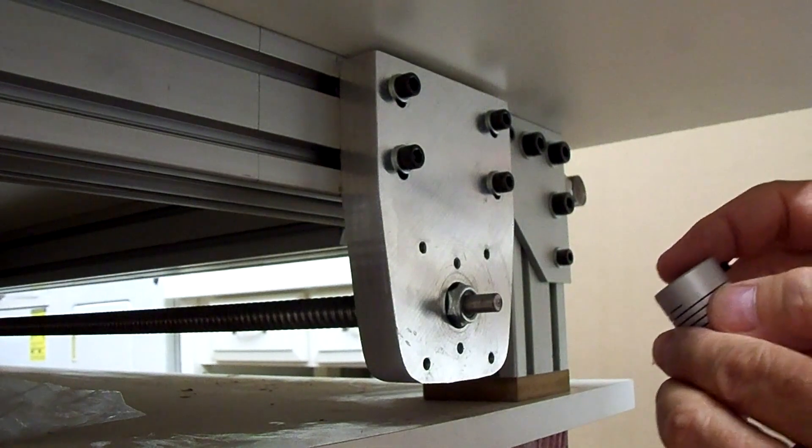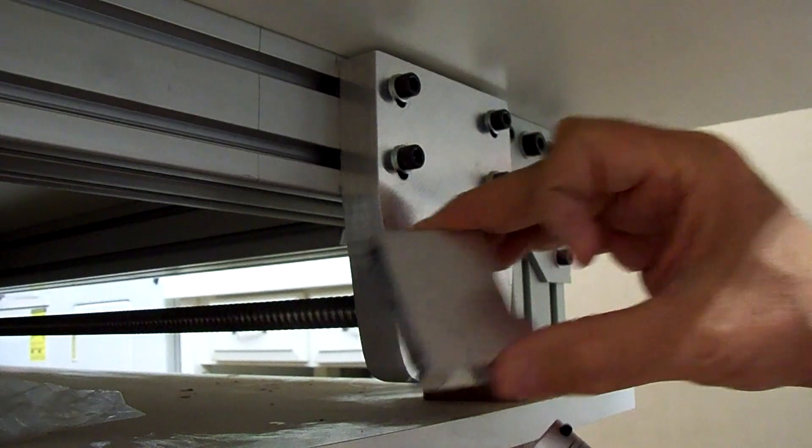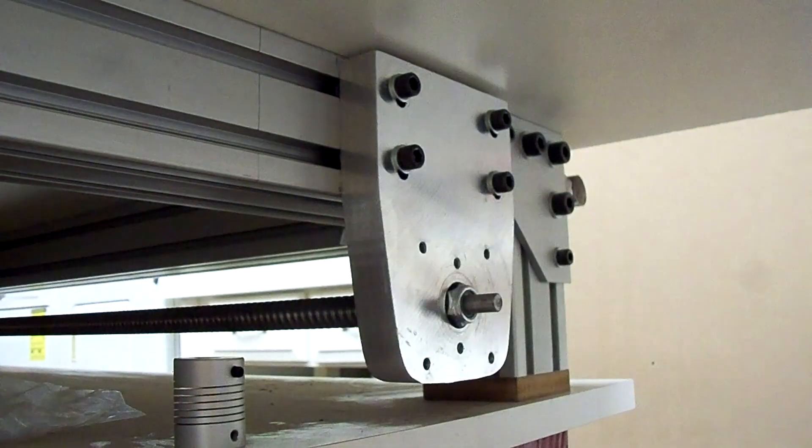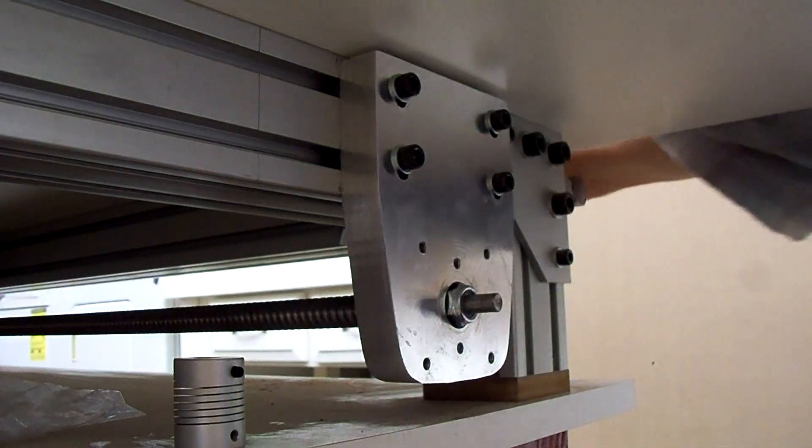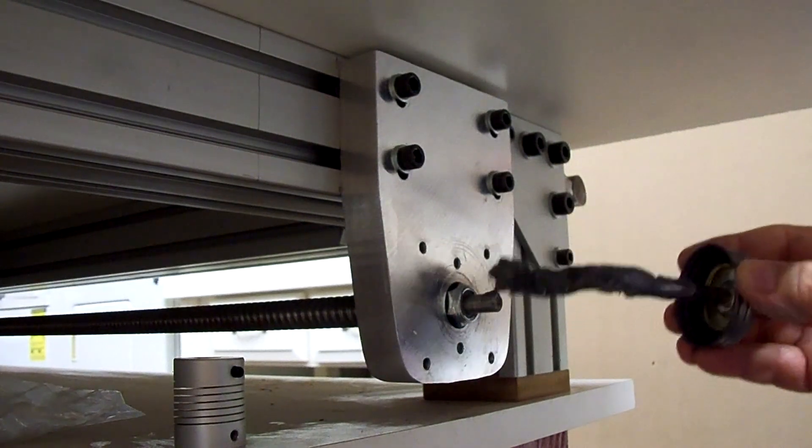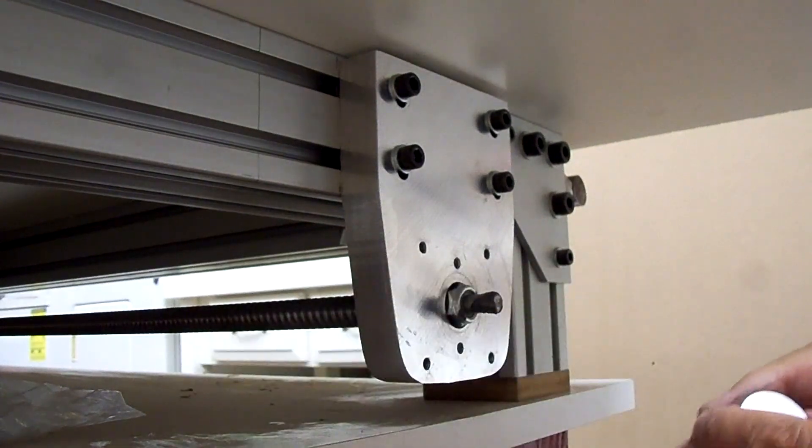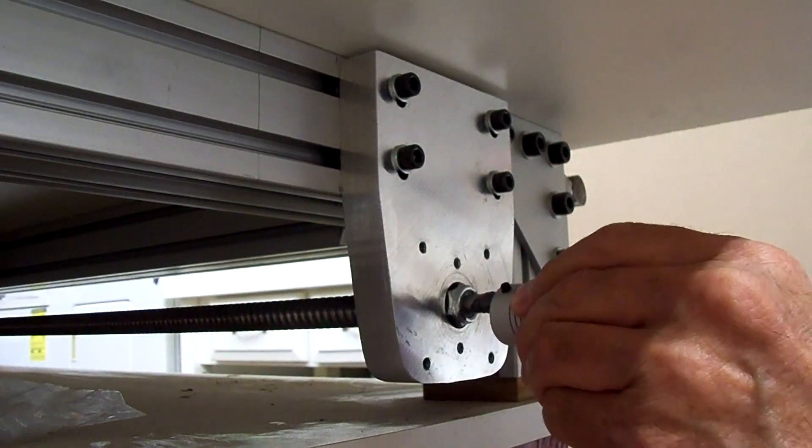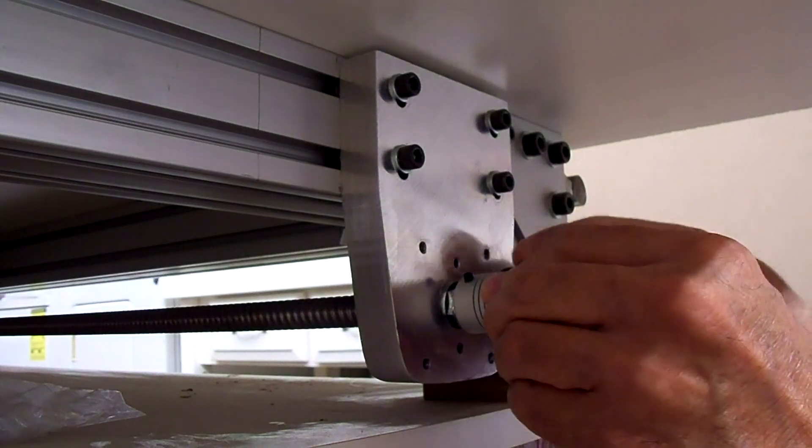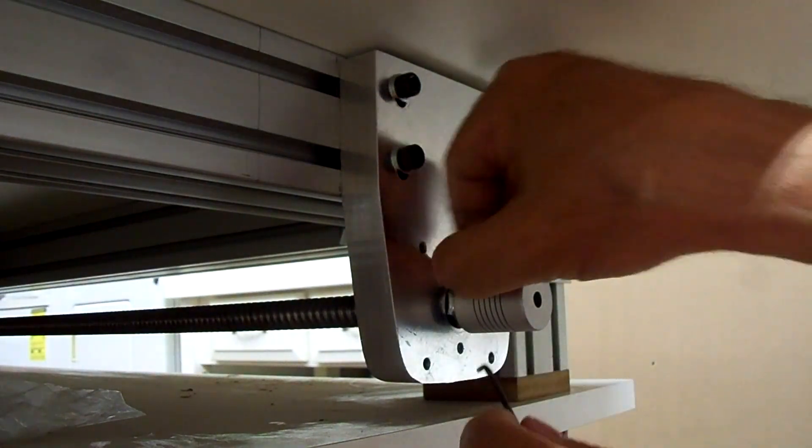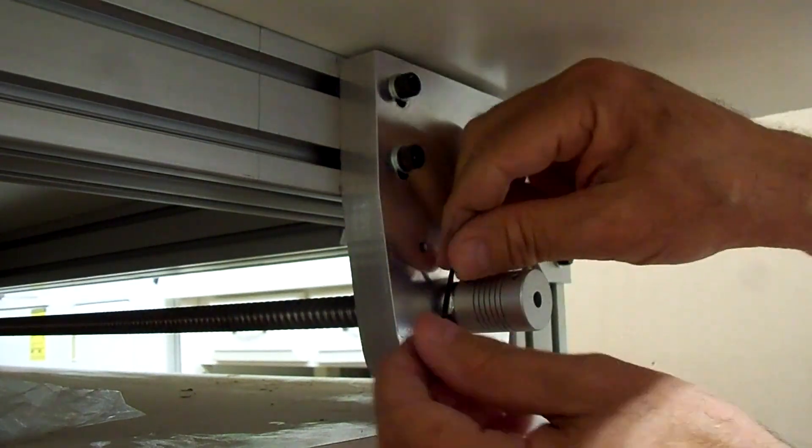Put the coupling on here first and then try to put the motor on because you got to put these blocks in at the same time. I'm also going to put a little bit of never-seize on this shaft so hopefully if I have this problem again it'll be a little easier to get off.